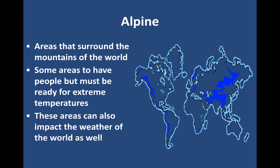The final area I'm going to talk about is the Alpine region — areas that surround the mountains of the world. Some areas do have people, but you must be ready for extreme temperatures, really cold, and sudden things like avalanches. It can be tough, but also very beautiful. Mountains also impact the weather of the world. Wind coming down from the Rocky Mountains can go across the plain states — one of the reasons this area gets a lot of tornadoes. In Northern India, clouds come with moisture from the ocean and travel across India, but when they reach the Himalayas — the tallest mountain chain in the world — they have to dump all their rain because the clouds can't move above the Himalayas. Thus, this creates a huge jungle area below.